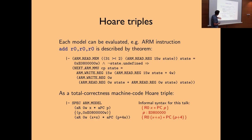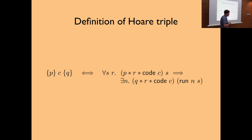I wrote specifications for these instructions. Here we have a specification saying: if you start in the state where register 0 has value x and the program counter has p, and p points to that instruction, then after executing it you'll be in a state where register 0 has x plus x, and the program counter gets plus 4. Why 4? Because there are 4 bytes in one word, so you go one word forward in memory.